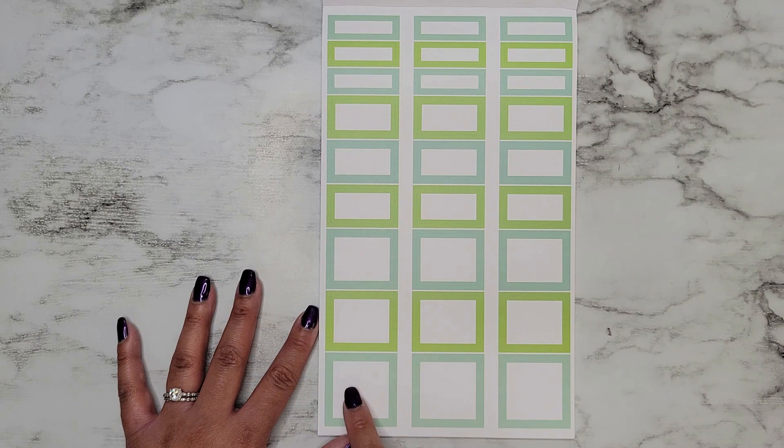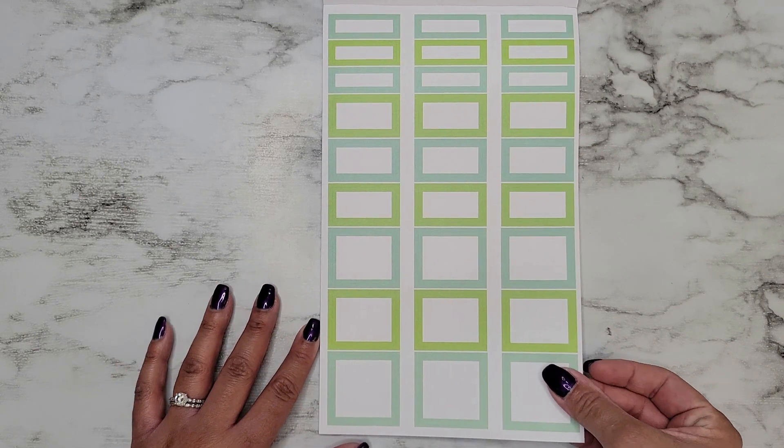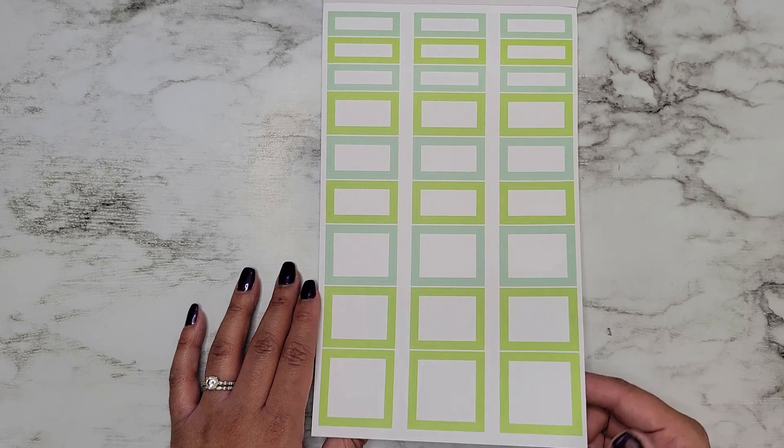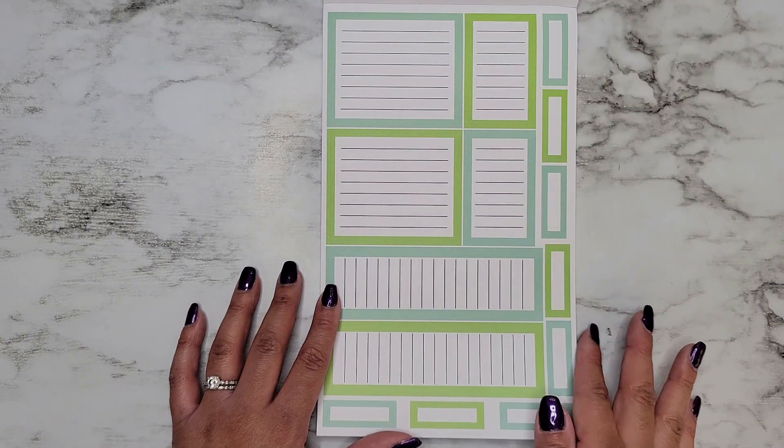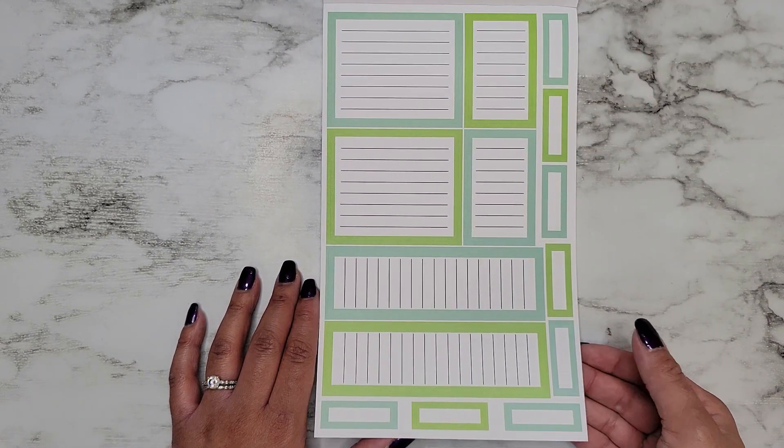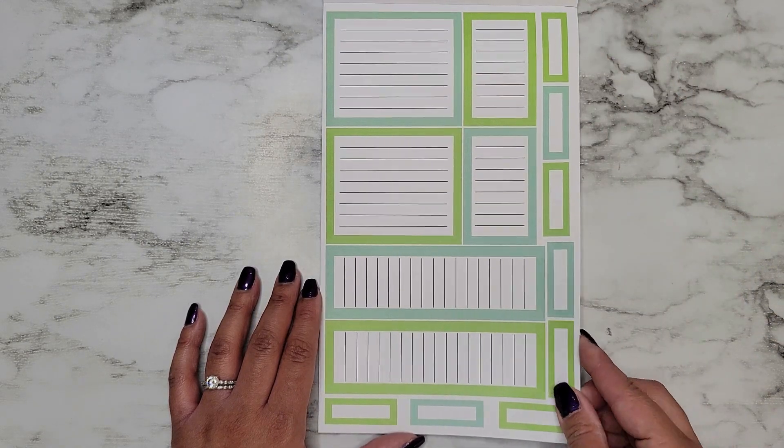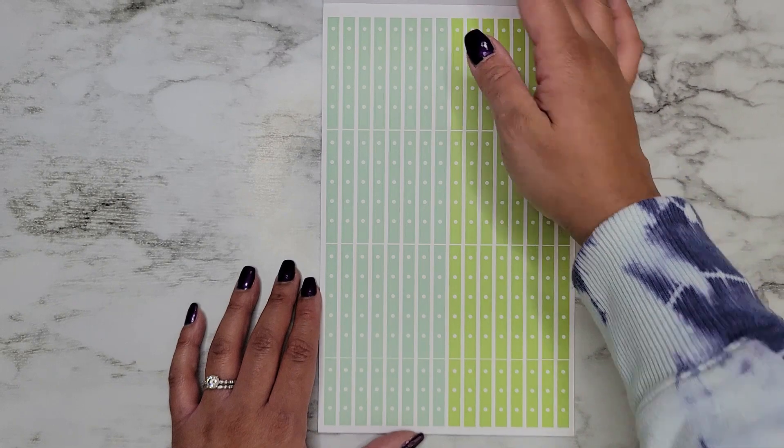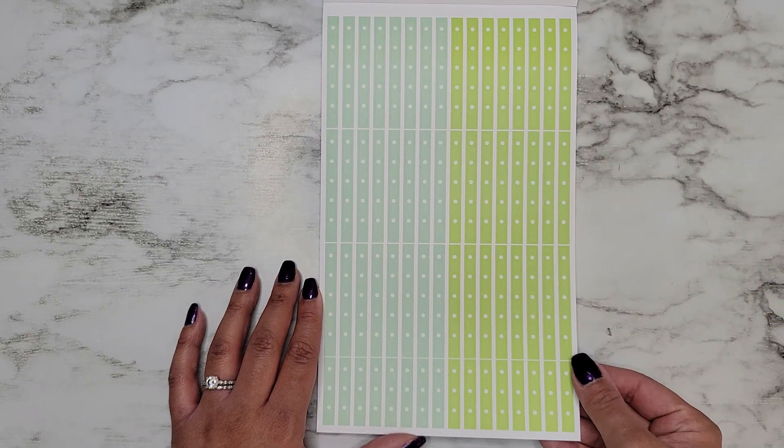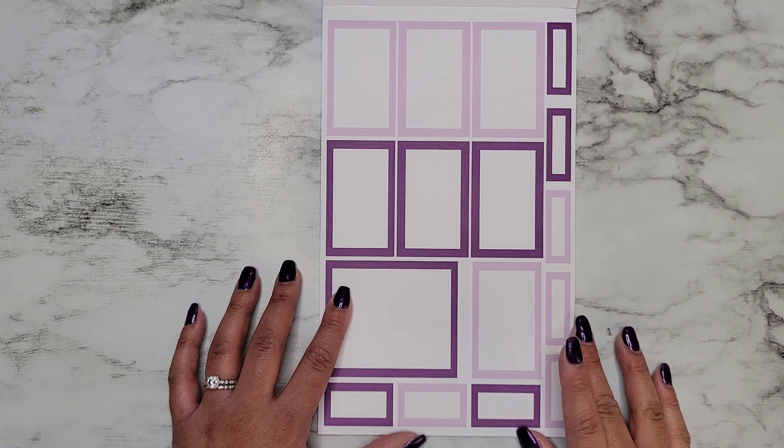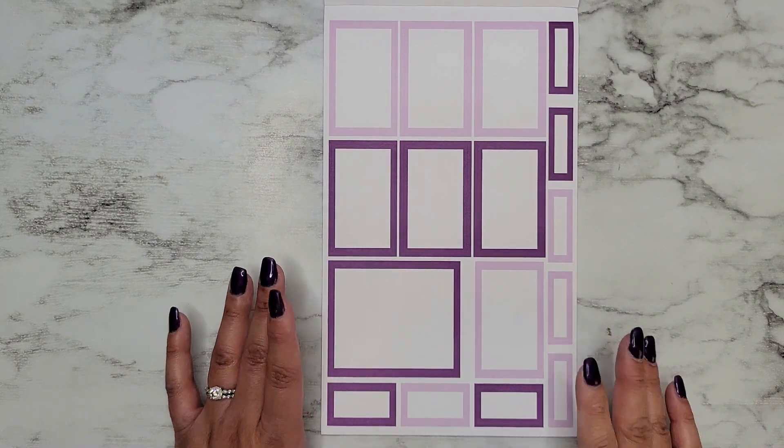Then we get our small stickers. Again, these are alternating down here at the bottom. Love these, this color is some of my favorite. Then our ones with the lines, get two pages of those, and then the matching checklists.